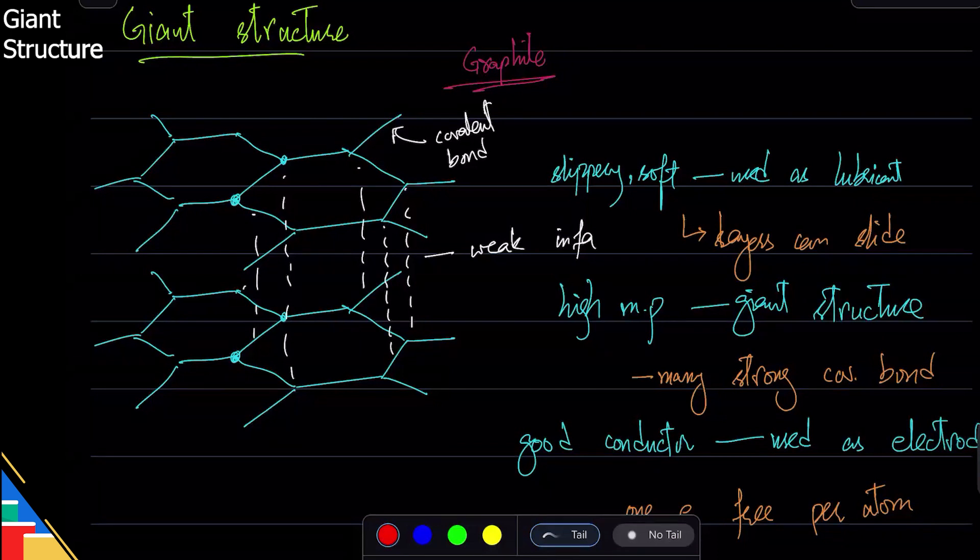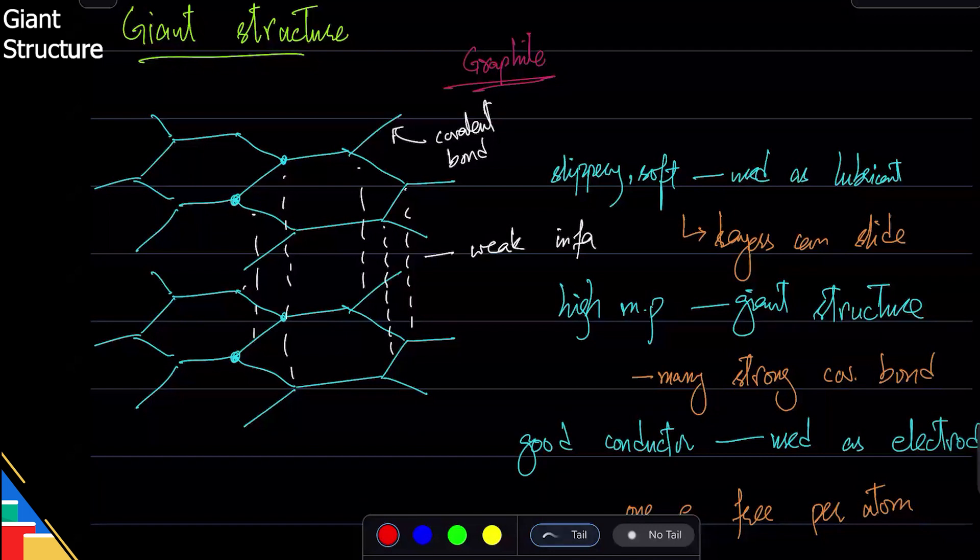Similarly there's high melting point. It's a giant structure which has high melting point and many bonds have to be broken before you melt it, so you need high energy to break all those bonds. Interestingly, graphite is a unique case—even though it has giant structure, it also has free electrons, and that means it is a good conductor.